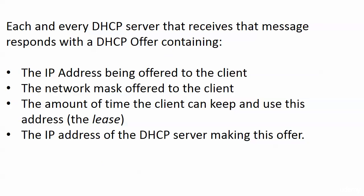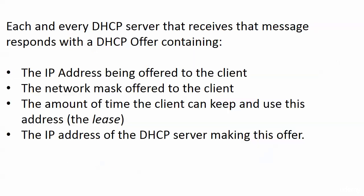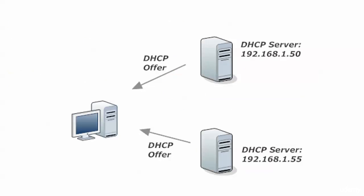Each and every DHCP server that receives that message is going to respond with an offer. It will offer an IP address from that server's IP address pool — one of those addresses is taken from the pool and put in the offer, and it can't be given to anybody else while this negotiation is ongoing. The network mask offered to the client is in there, the lease duration is in there, and the IP address of the DHCP server making that offer is in there. In many networks, the host will only be able to reach one DHCP server, but on other networks with redundancy you may have two servers both online.